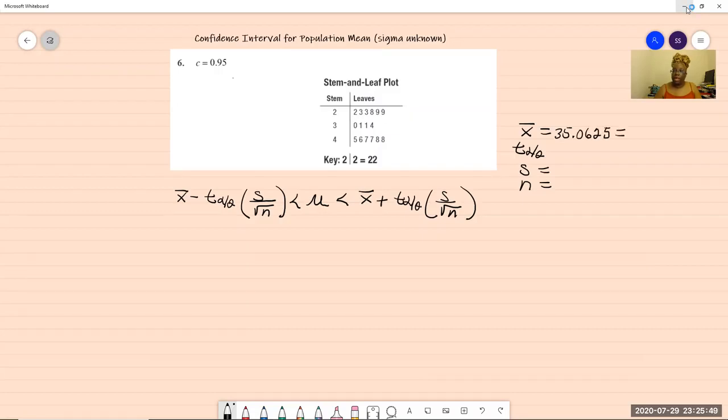You click enter and there is your X bar, 35.0625. Now, if you're at another school, you have to figure out what your instructor wants. But as far as I'm concerned, the rounding rules are important. The rounding rule for mean is one more digit than is listed in the data. Our data has no decimal. So what your X bar needs to be for to get credit from me is 35.1.